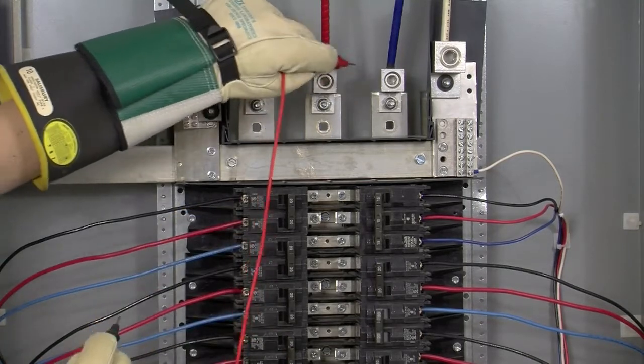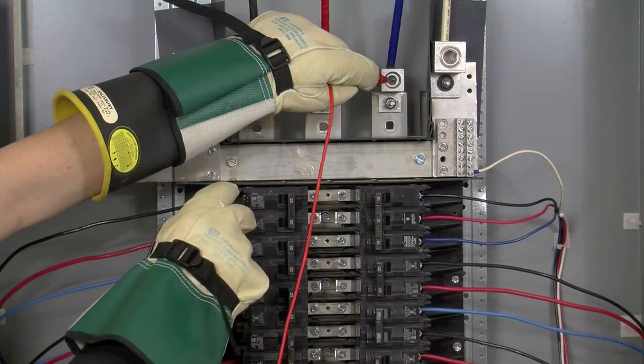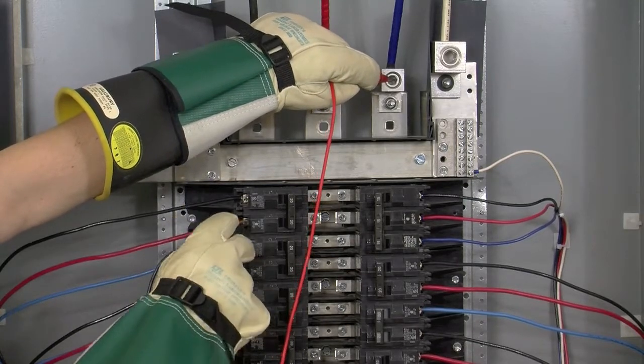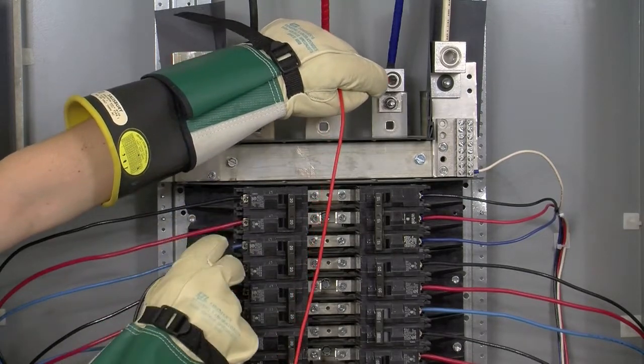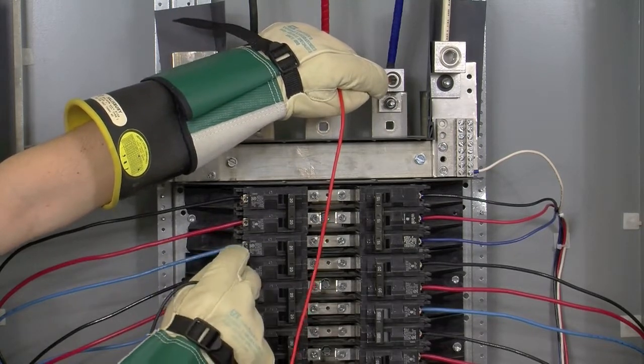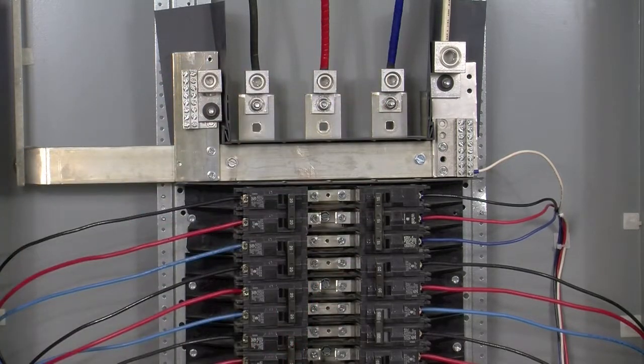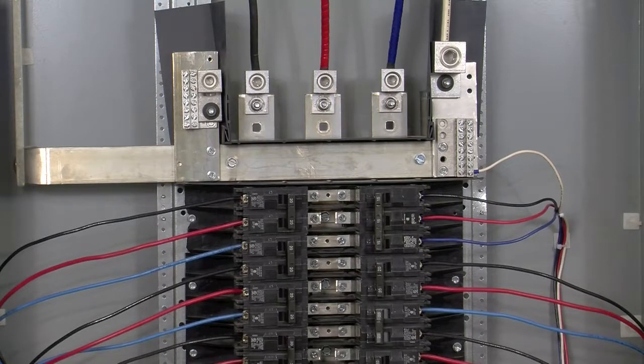Moving on to phase C. Here we have 208 volts difference. Here we have 208 volts difference. And here we have 0 volts difference. So we know that the third pole down is phase C. We're going to want to repeat this phase test for every line that we have CTs installed on. Once all the phasing is identified, we can go ahead and install our CTs.